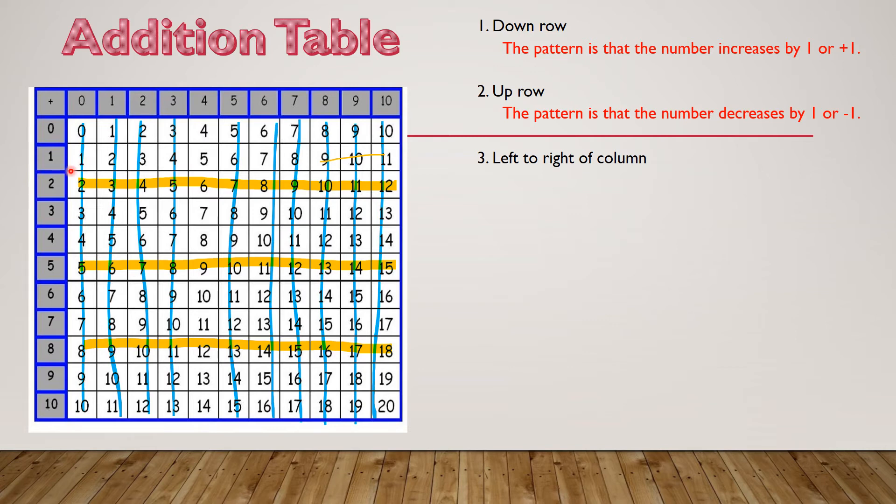So the pattern is we're going from 2 to 3, 4, 5, 6, 7, 8, 9, 10, 11, 12. From that line, it looks like we're increasing by one. Let's check out this one: 5, 6, 7, 8, 9, 10, 11, 12, 13, 14, 15. And it is the same. The pattern is that the number increases by one.